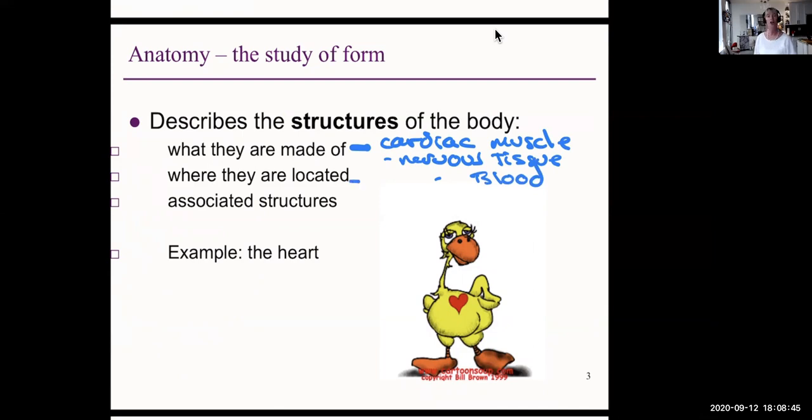Where is the heart located? In which cavity? In the chest cavity, otherwise known as the thoracic cavity. Associated structures. What keeps blood from flowing back into the ventricles from the atria? Valves. Those valves are kept in place by tendons. The blood is transported to the body via veins and arteries.